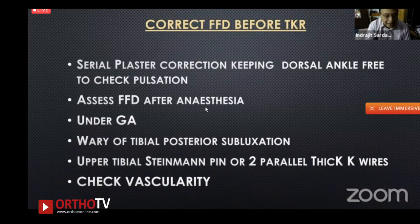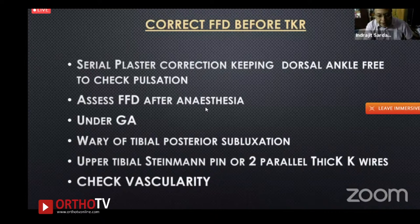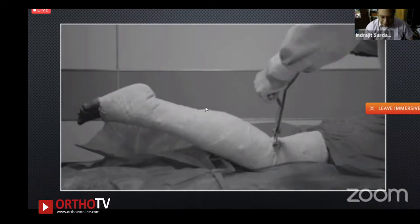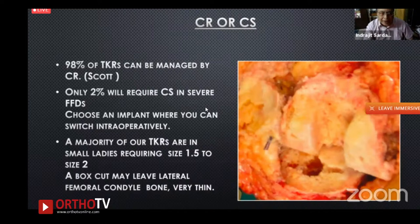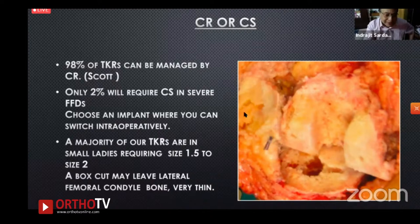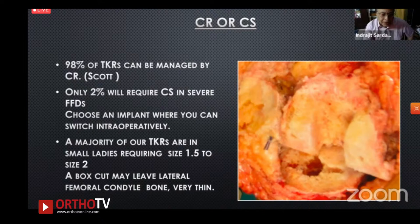Assess fixed flexion deformity under general anesthesia. Be wary of tibial posterior subluxation when correcting, which is why upper tibial Steinmann pin or two parallel thick K-wires are used before TKR correction. Always check vascularity throughout. For fixed flexion deformity more than 45 degrees, assessing after anesthesia is essential. The rule of thirds can also be applied: if 90 degrees FFD, correct one third to 60 degrees and continue with clustered wedge corrections.